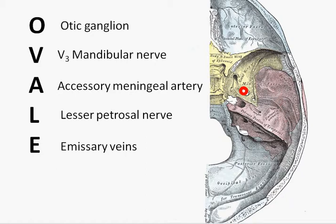So there we are, a nice easy aide-mémoire to the contents associated with or what runs through the foramen ovale. O-V-A-L-E: otic ganglion, mandibular nerve, accessory meningeal, lesser petrosal, and emissary veins.